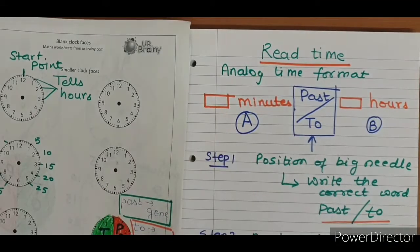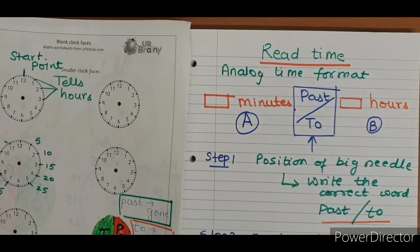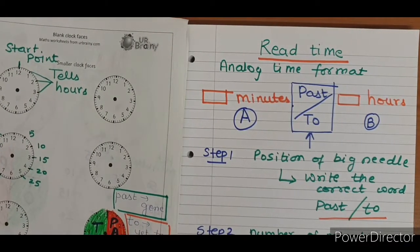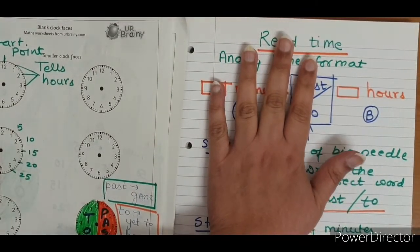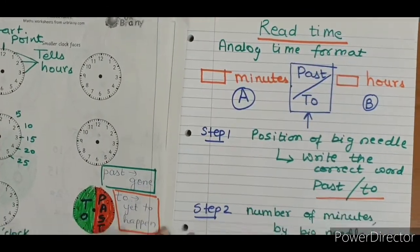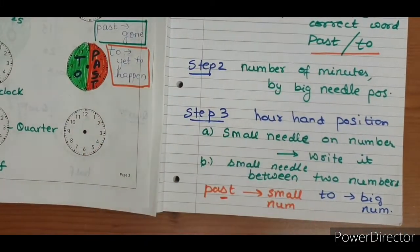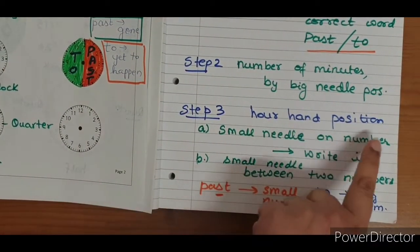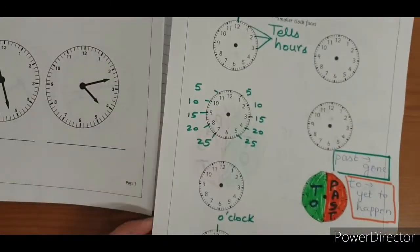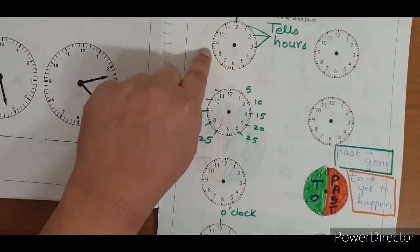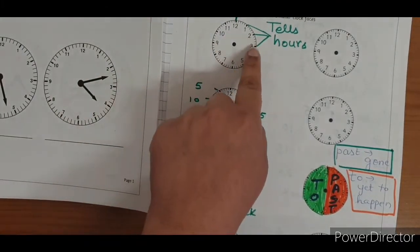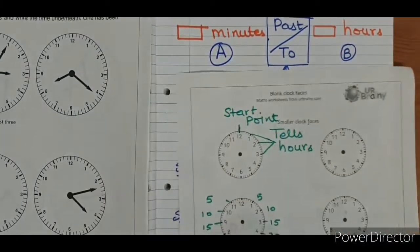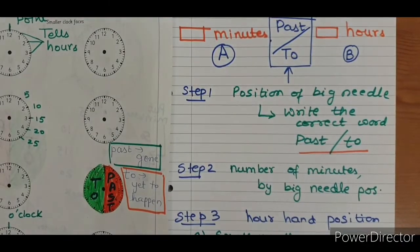Remember, for the numbers 12, 6, 3, and 9, we are going to use standard words. After finishing these two steps, we will move on to Step 3. In Step 3, we will look for the hour hand position, which is my small needle. If my small needle is pointing exactly on any given number, I will write that number in the hours box.